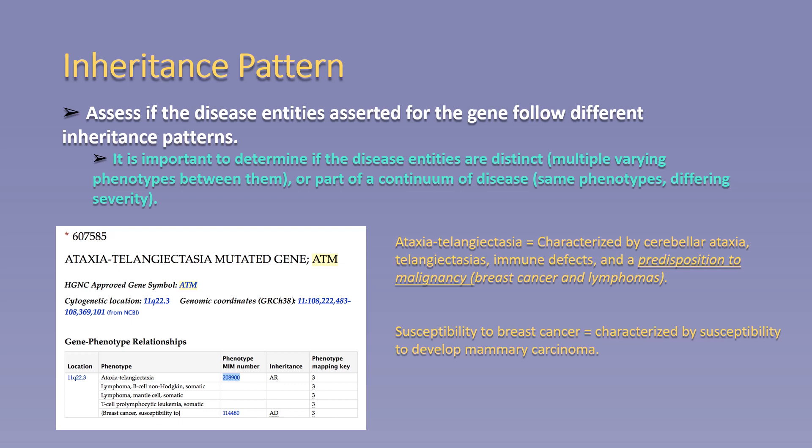For the example given, we find that the gene ATM is asserted with the disease entity Ataxia Telangiectasia in an autosomal recessive inheritance pattern, while the susceptibility to breast cancer disease entity is inherited in an autosomal dominant inheritance pattern—a difference between the two disease entities. Furthermore, while individuals with autosomal recessive Ataxia Telangiectasia are at risk for developing breast cancer, those individuals with autosomal dominant variation in ATM at risk for breast cancer are not at risk for developing the other phenotypic features associated with Ataxia Telangiectasia, thus further supporting separate split curations for these disease entities.